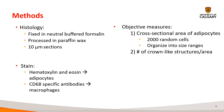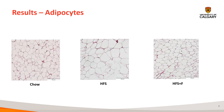We had two objective measures: the first was the cross-sectional areas of the adipocytes, and the second was the number of crown-like structures. Here we have some images of our stained adipocytes. We see how the high-fat, high-sucrose group off the bat has larger adipocytes, whereas the other two groups have smaller adipocytes.